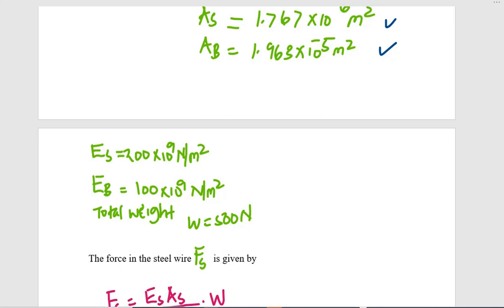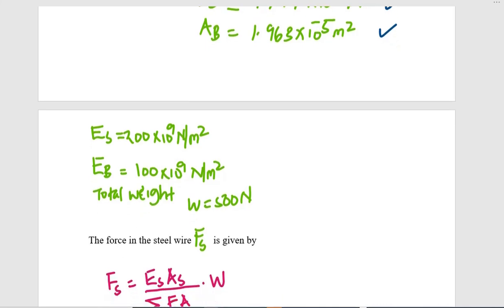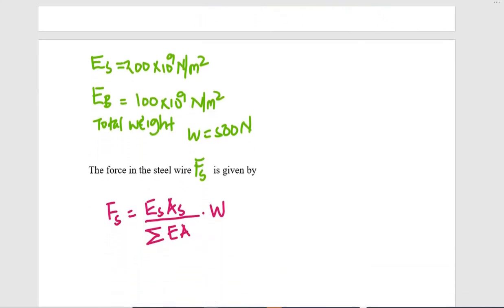Given that the modulus of elasticity for steel (ES) is 200 × 10⁹ N/m², and the modulus for brass (EB) is 100 × 10⁹ N/m², the total weight carried by the combination of four brass wires and one steel wire is 500 newtons. Now we need to find the force in steel.